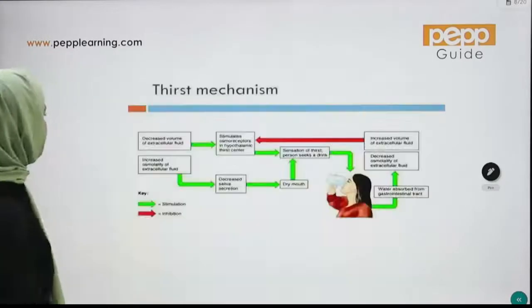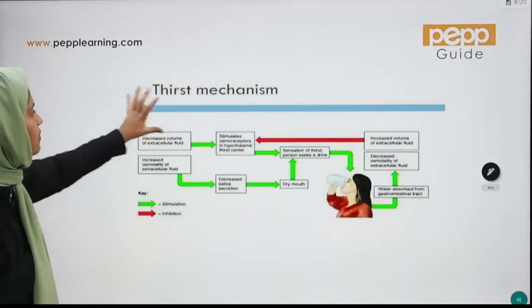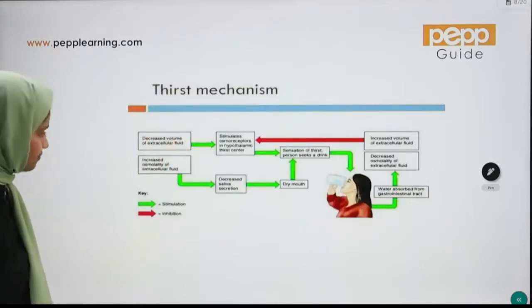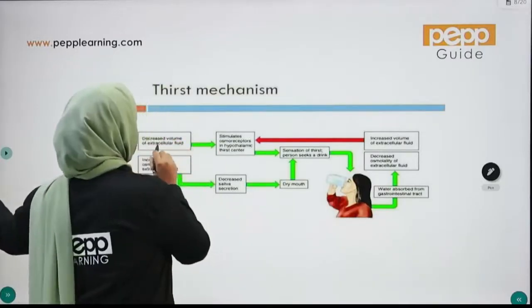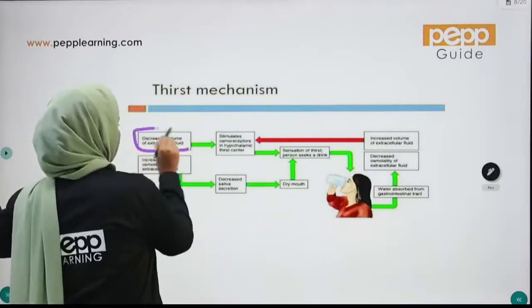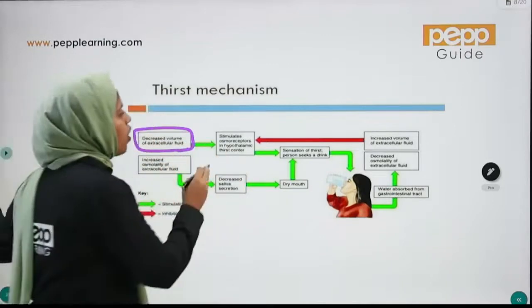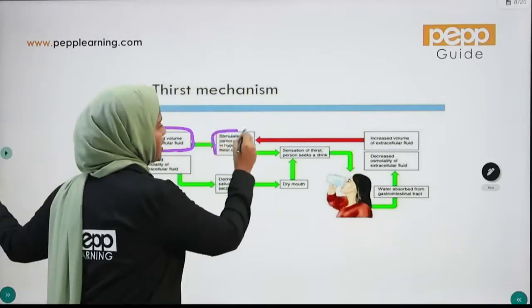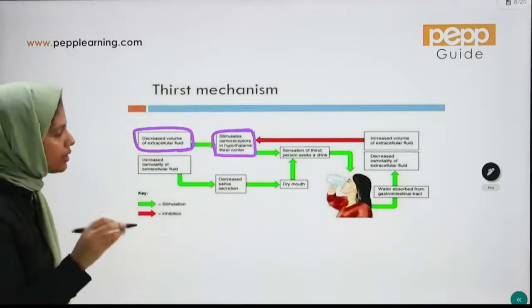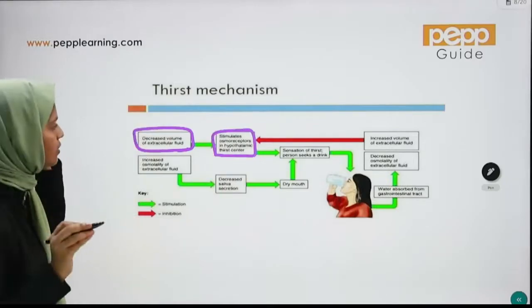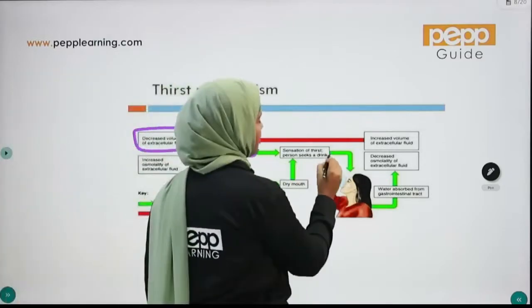In the osmotic thirst mechanism, decreased volume of extracellular fluid causes osmoreceptors to detect the change in osmotic pressure. These osmoreceptors are in the hypothalamus, and the thirst center is stimulated, producing a sensation of thirst and the urge to drink.